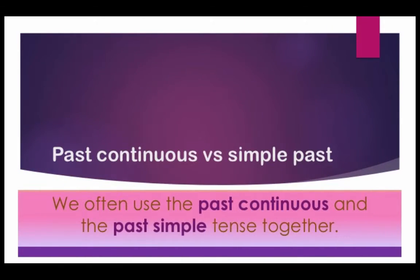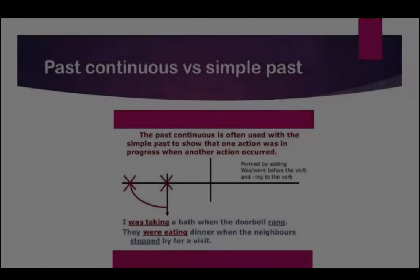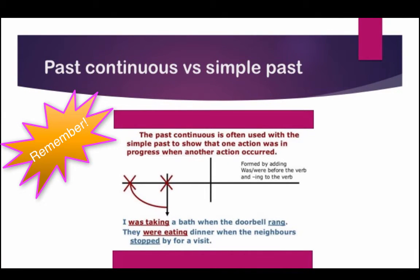Past continuous versus simple past. We often use the past continuous and the simple past tense together. The past continuous is often used with the simple past to show that one action was in progress when the other action occurred.